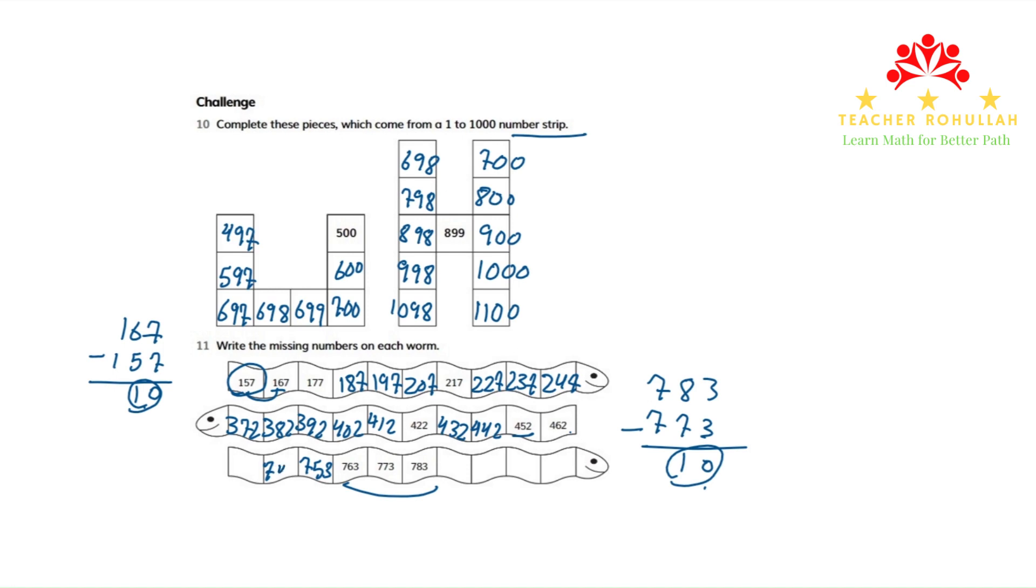753, 743, 733. To the right, we have 783. The next number will be 793, and then 803, 813, 823.